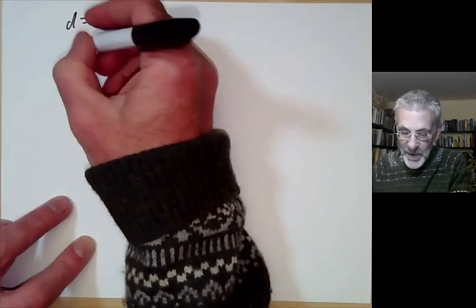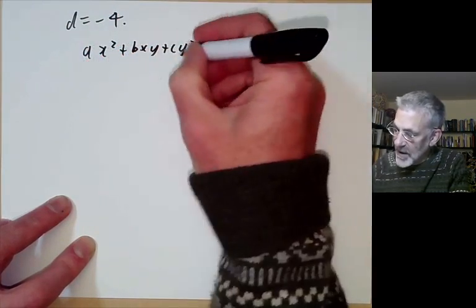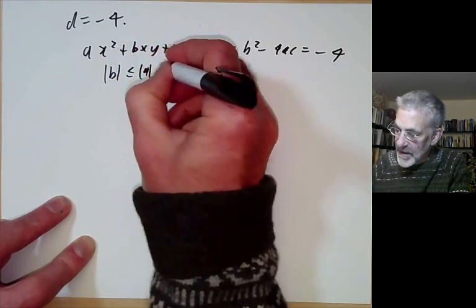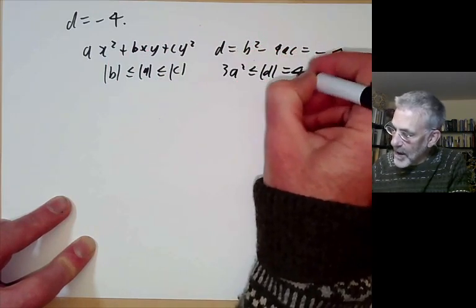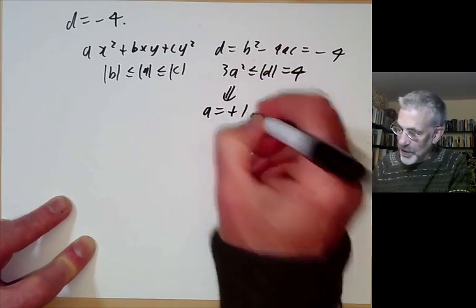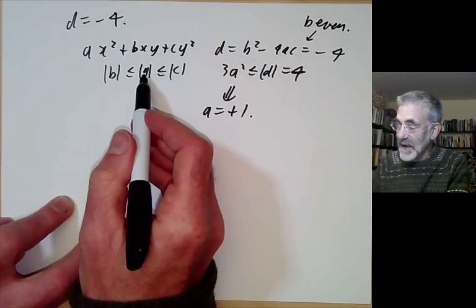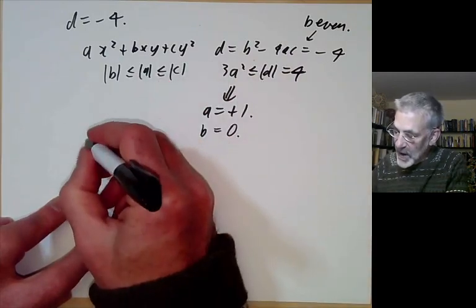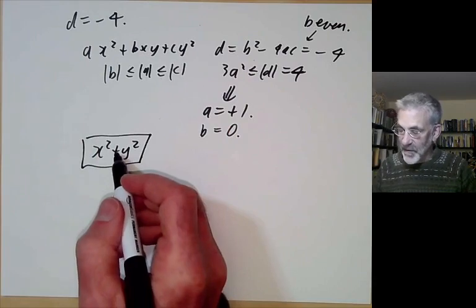Now let's look at discriminant d = −4. We want reduced forms with b² − 4ac = −4. We have 3a² ≤ 4, implying a = 1. Then b must be even with |b| ≤ a, so b = 0, and c is determined to be 1. The only positive definite reduced form of discriminant −4 is x² + y².